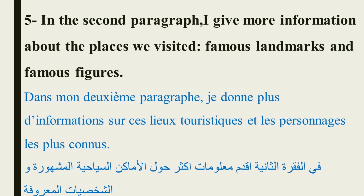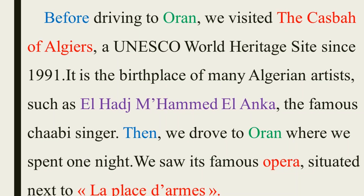Step 5: In the second paragraph, I give more information about the places we visited — famous landmarks and famous figures. Before driving to Oran, we visited the Casbah of Algiers, a UNESCO World Heritage Site since 1991. It is the birthplace of many Algerian artists, such as Al-Haj Mohamed Al-Anka, the famous chaabi singer.